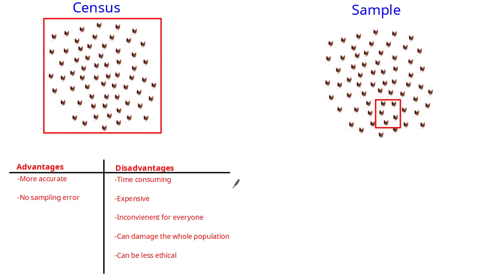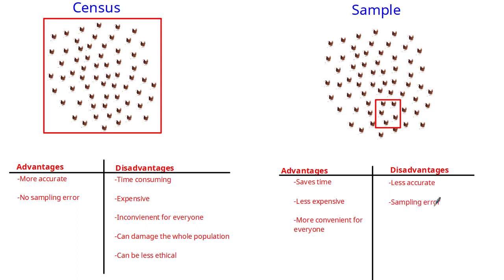Let's now compare the advantages and disadvantages of a census with a sample. One of the advantages of taking a sample is that it saves time, it's less expensive, and it's more convenient for everyone. Looking at the disadvantages of a sample, it's less accurate and it's very likely you're going to get a sampling error if the sampling size is less than the census size.